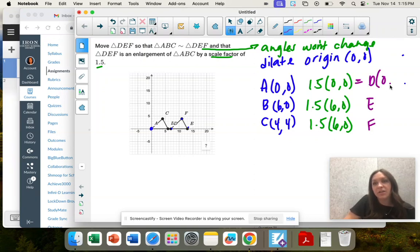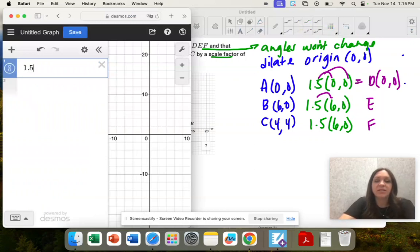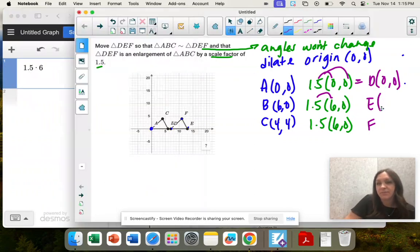So D is going to be (0,0). 1.5 times 0 is 0. 1.5 times 6 is 9, and then times 0 is 0.